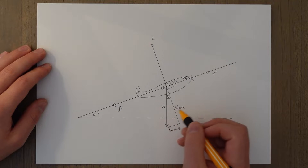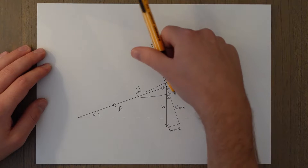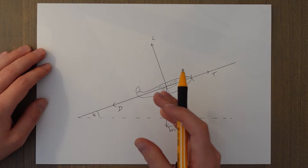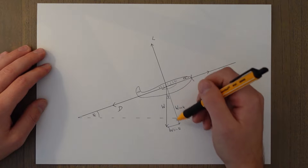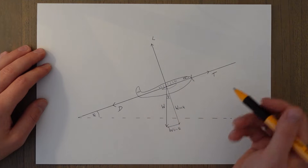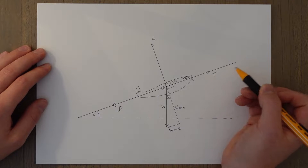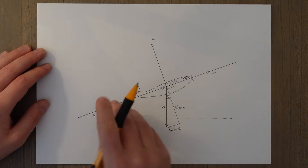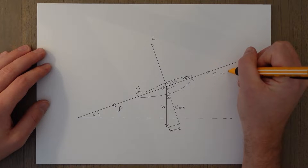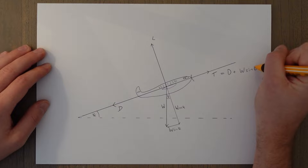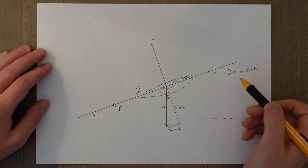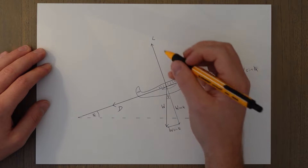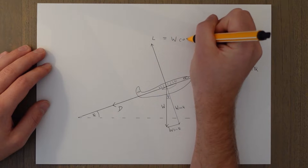The other side of the triangle is weight times cosine theta, and that is the force acting into the slope. For us to be in a steady climb, the forces have to be balanced out — but for the components of the weight, not the total weight. Looking at thrust, we can see that it now has to counteract the drag plus the weight sine theta component pulling us down the slope. So for a steady climb: thrust equals drag plus W sine theta.